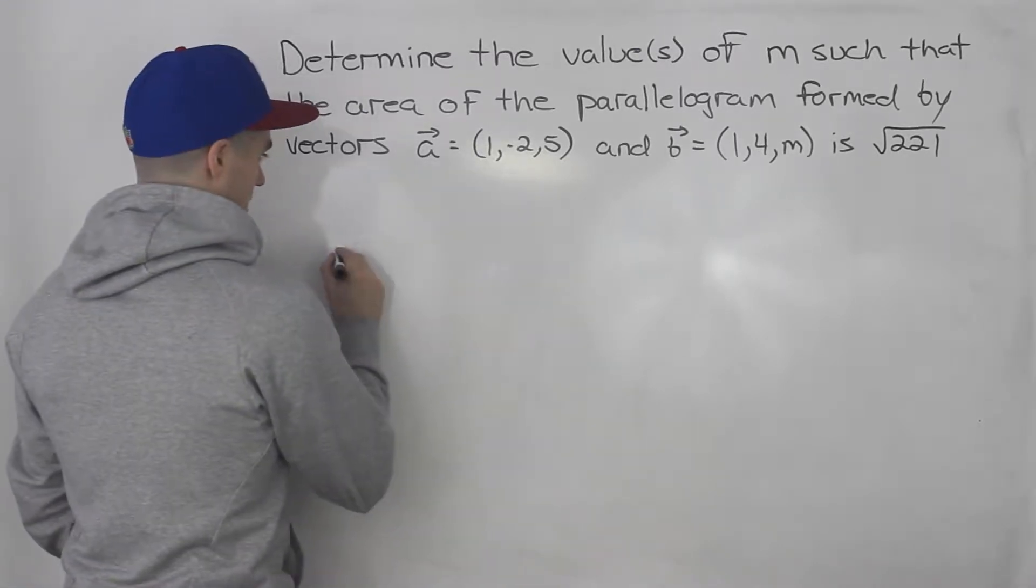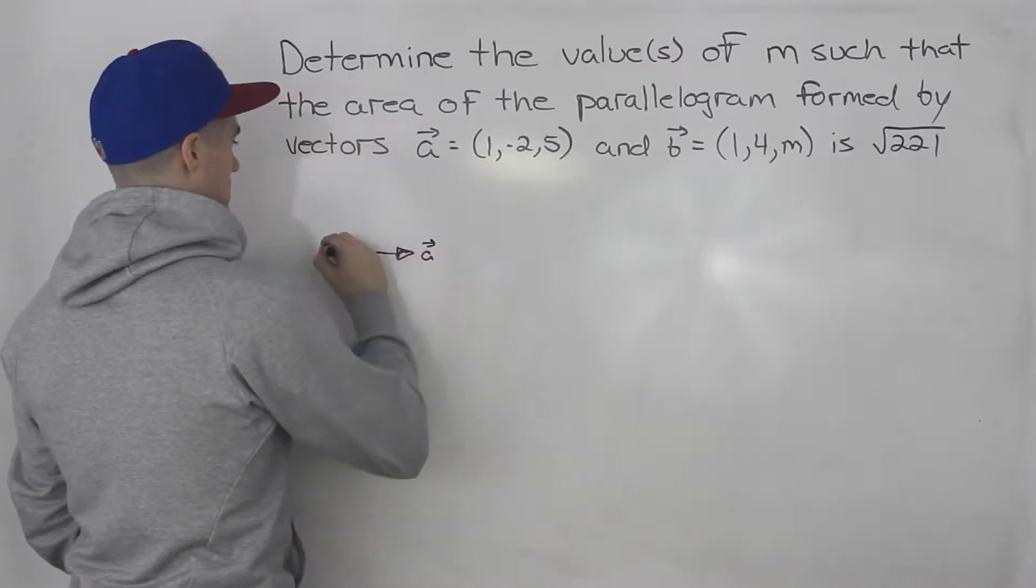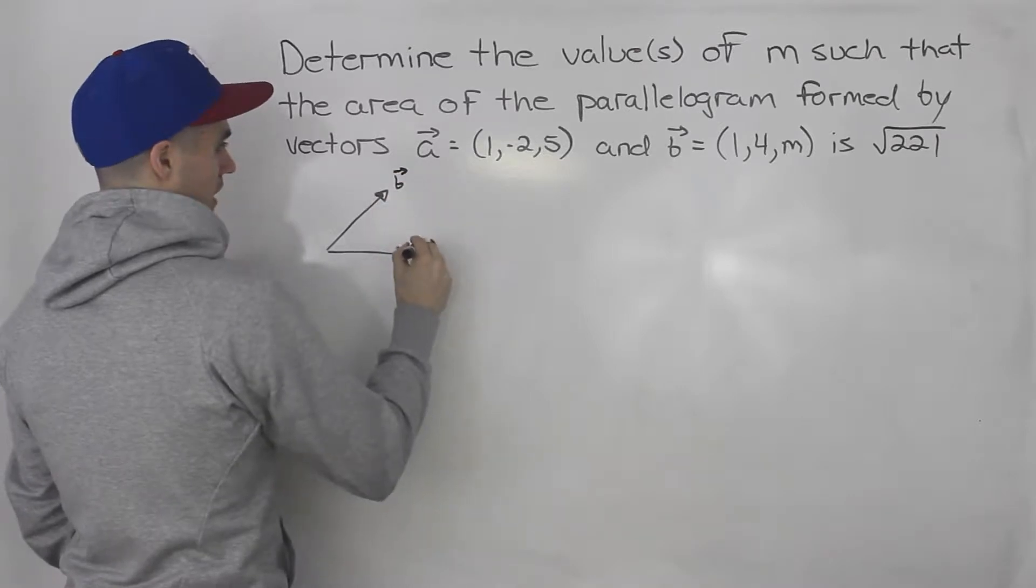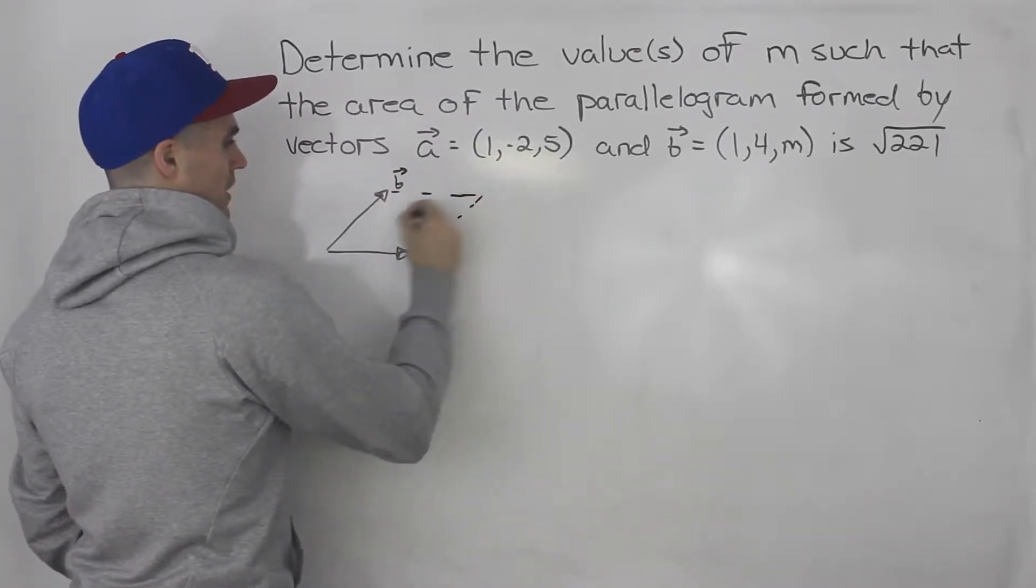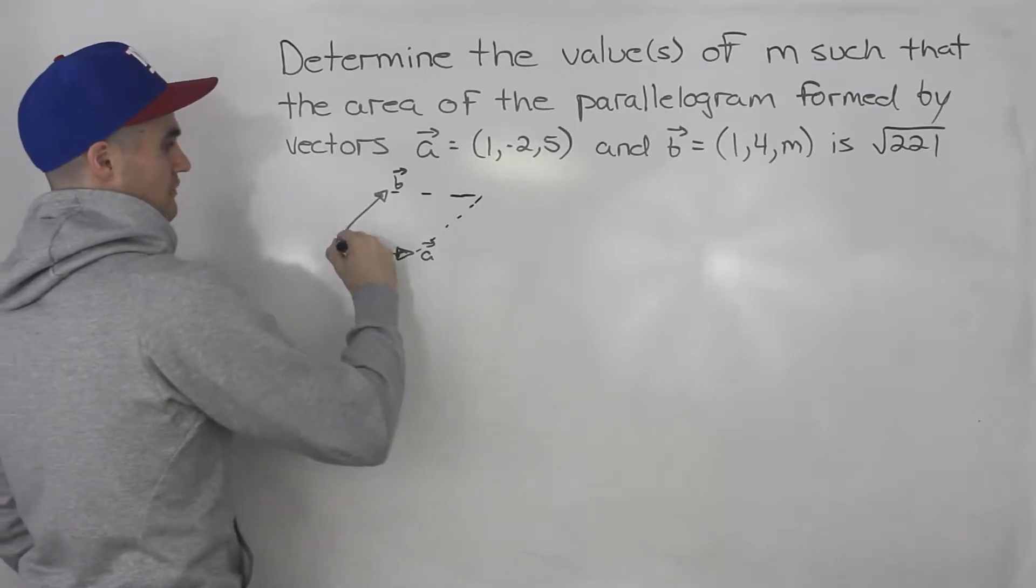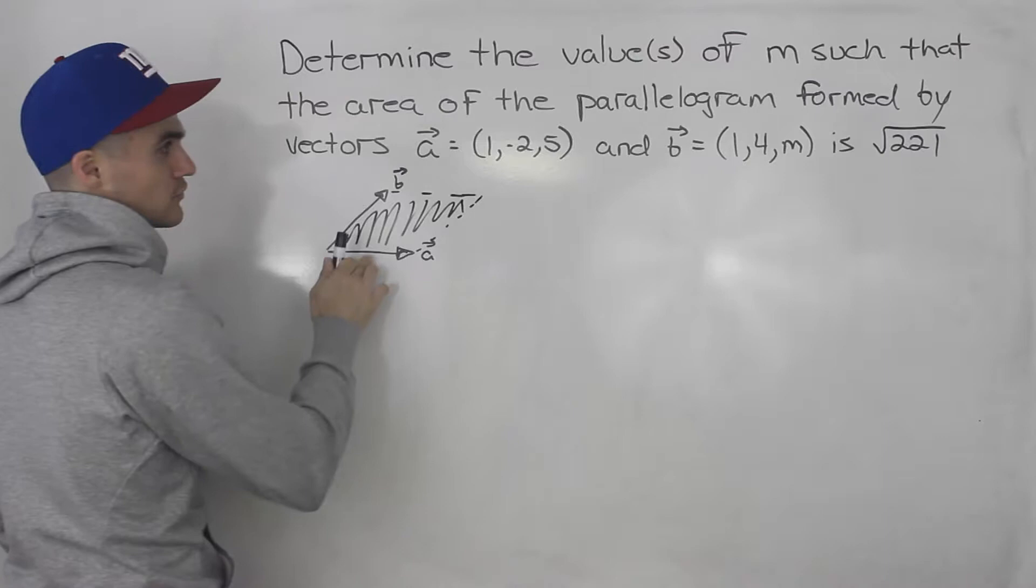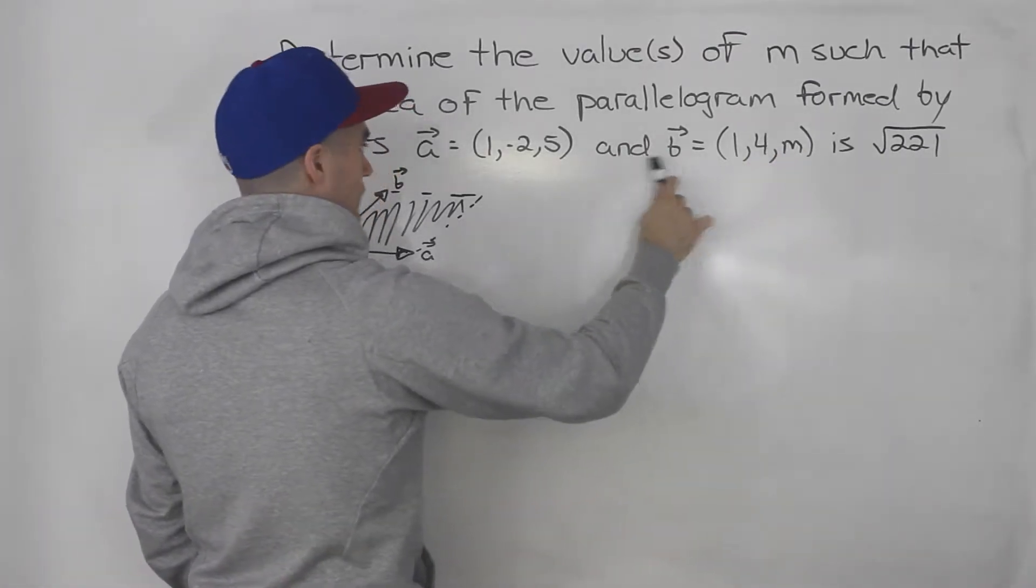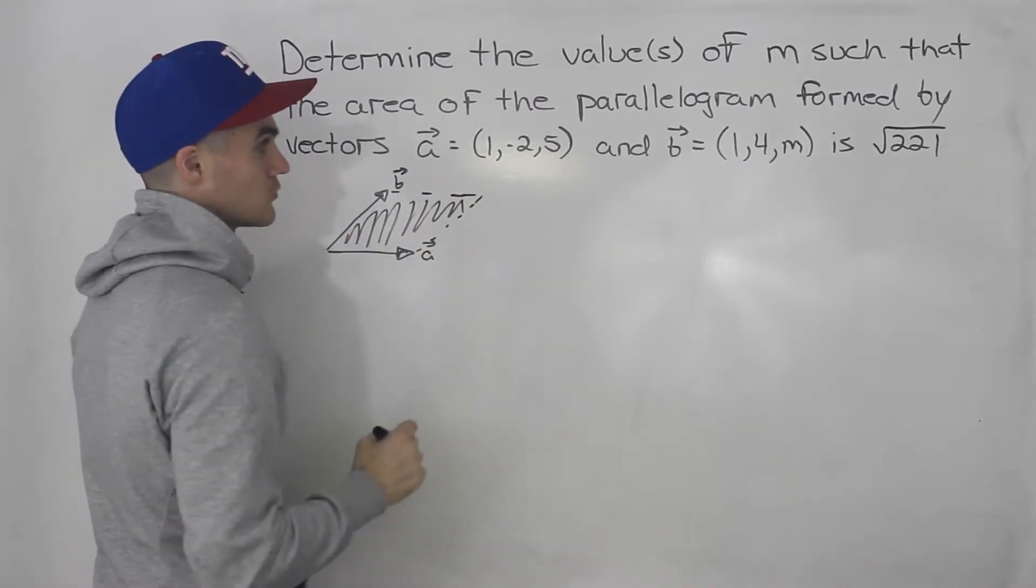To give you a brief drawing, we got vector a and vector b, and both of these vectors, if we're adding them, they're forming this parallelogram here. We got to find the area of this parallelogram. Actually, we don't have to find the area, we're given the area. We have to find this z component of vector b which makes the area of this parallelogram root 221.